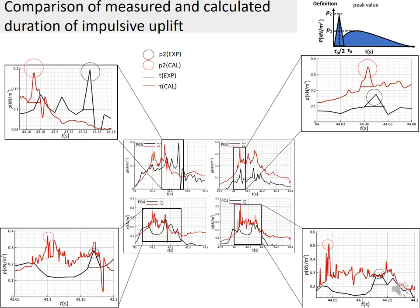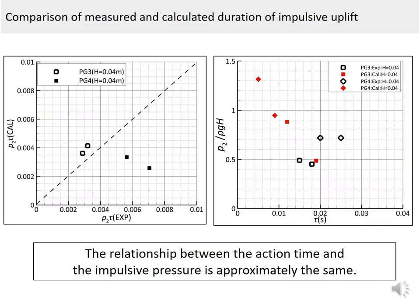The following is a relationship between the duration and the maximum wave pressure for the complex thick parts of PG3 and PG4. It is a figure which shows the definition of the duration to compare the experimental values and the calculation values. Next is a quantitative evaluation of the duration and the maximum wave pressure. The value of impulse is underestimated by the calculation value, as are the duration and the maximum wave pressure.